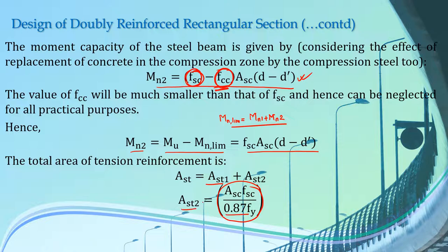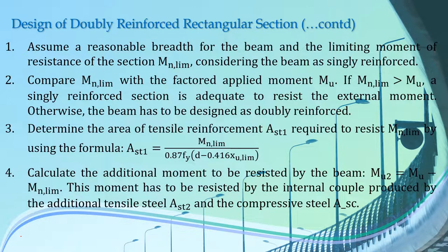AST1 can be derived from the formulas for singly reinforced beam, and AST2 is given as ASC times FSC over 0.87 FY. This comes from the equilibrium of tensile and compressive forces in the steel beam. The tensile force becomes 0.87 FY times AST2, while the compressive force equals the area of compression steel times the stress of compression steel. Rearranging this equation gives AST2 = ASC times FSC over 0.87 FY.